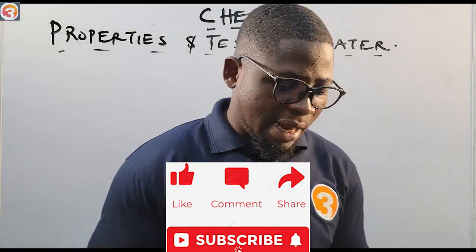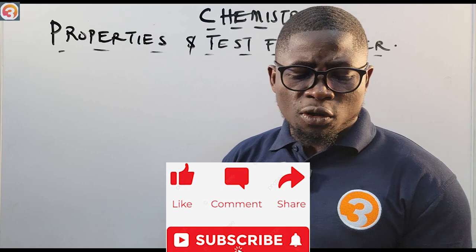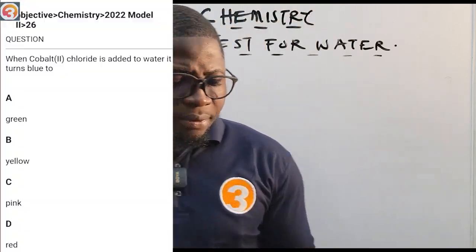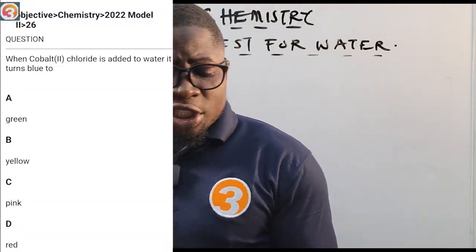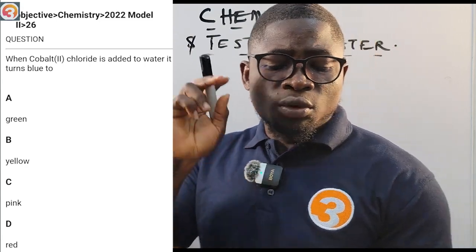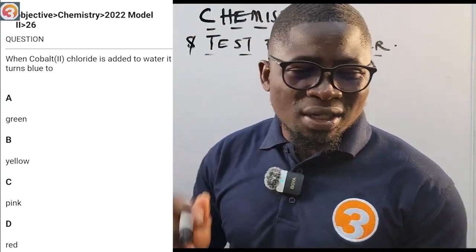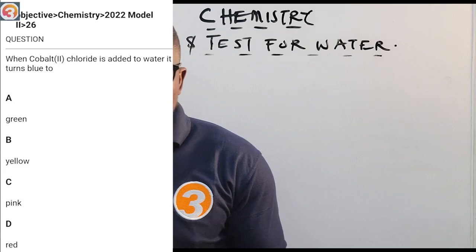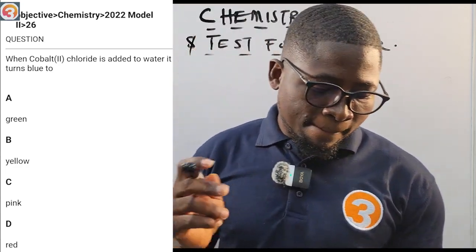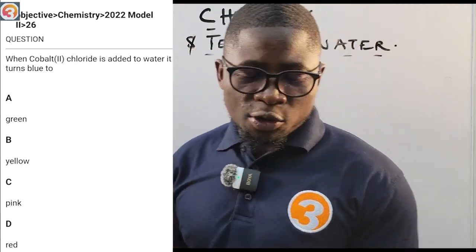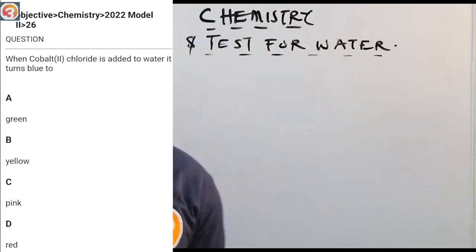Let's take a question from the Otir School Jump Up app. This is a 2022 question number 26. It says: when cobalt(II) chloride is added to water, it turns blue to — A: green, B: yellow, C: pink, D: red.